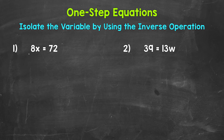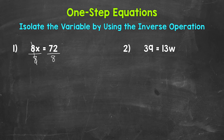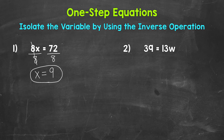The opposite of multiplication is division. So, let's divide the left side of the equation by 8. Whatever we do to one side of the equation, we must do to the other in order to keep it balanced and equal. So, let's divide the right side by 8 as well. On the left side, we are multiplying by 8 and dividing by 8, so these 8s cancel each other out. 8 divided by 8 gives us 1, so we have 1x, which is just x. Our variable of x is isolated — it's by itself. So, x equals 72 divided by 8, which equals 9.